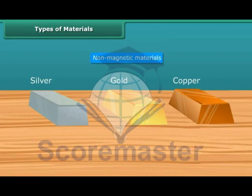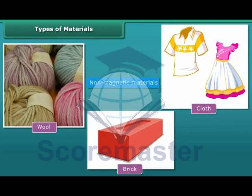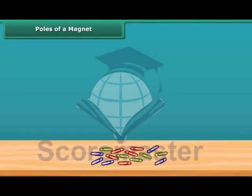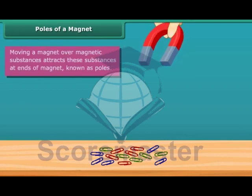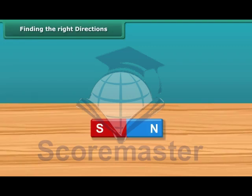Materials that are not attracted by magnets are called non-magnetic materials. For example, wool, cloth, and bricks are non-magnetic materials. Poles of a magnet: when you move a magnet over magnetic substances, you will see that these substances get attracted to particular parts of the magnet only. These are generally the two ends of the magnet, and these ends are called the poles of the magnet.